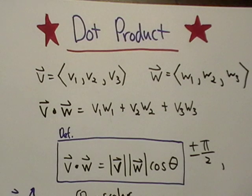Okay, we did scalar multiplication last time. The dot product is another type of multiplication with vectors.